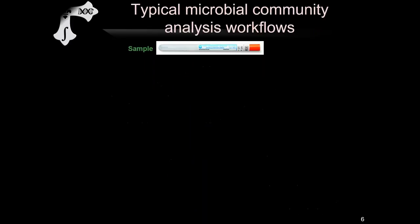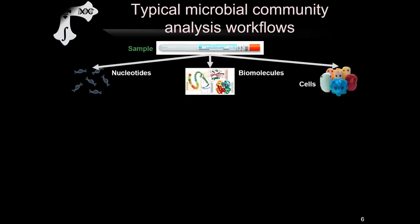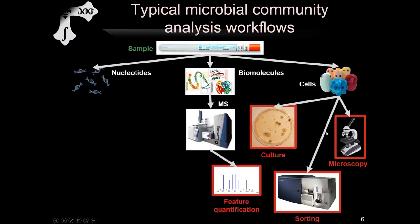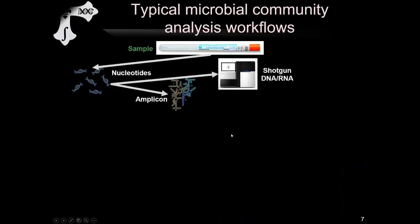These two complementary types of sequencing are accompanied by other molecular data types derived from microbiome samples. Microbial communities can be studied through cellular data — including high-throughput microscopy, culture-based methods, and flow cytometry — as well as other biomolecular data, typically from mass spectrometry, such as metabolomic or proteomic quantification.